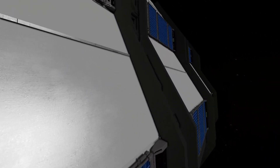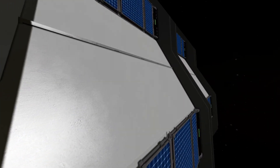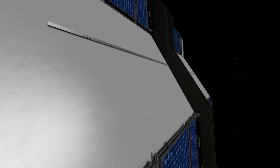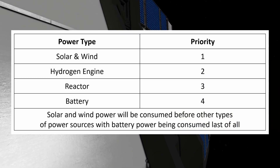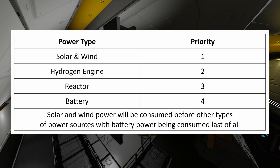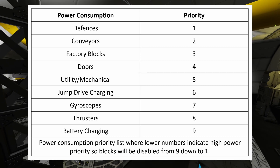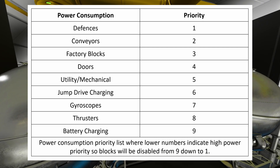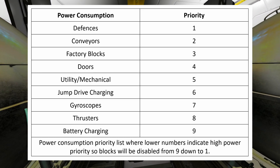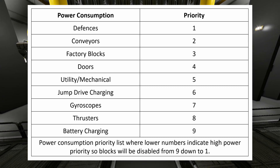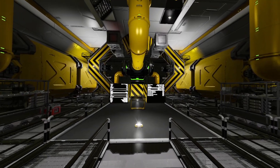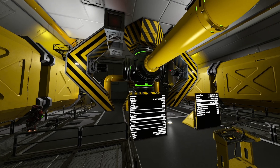In Space Engineers there is a power block priority list and a consumption block priority list. Solar and wind power sources are used first on a grid, then hydrogen engines, then reactors, and finally batteries. For consumption, if you have low power, blocks are disabled in this order: first any charging batteries are stopped, then thrusters are switched off, then gyroscopes are disabled, then jump drive charging is stopped, then utility mechanical blocks, then doors, then factory blocks such as assemblers and refineries, then conveyors, and last — defense blocks. This means that if you're on low power and under attack, the guns will still fire until all power is used up.